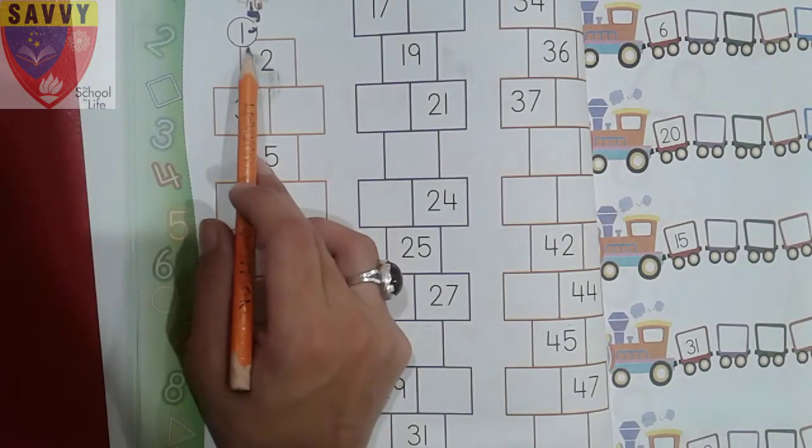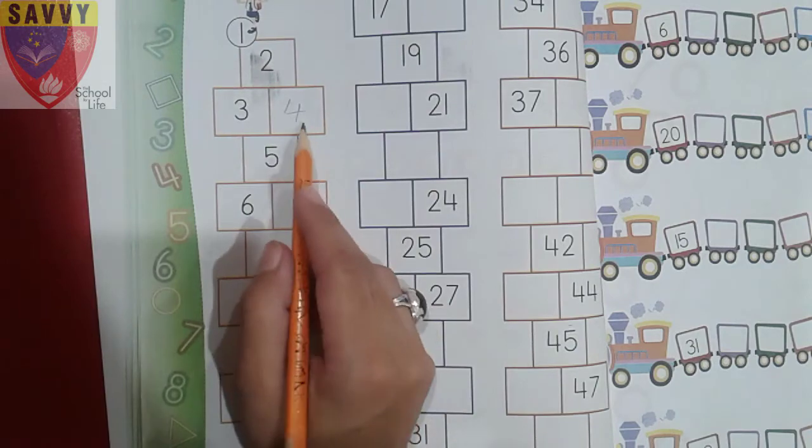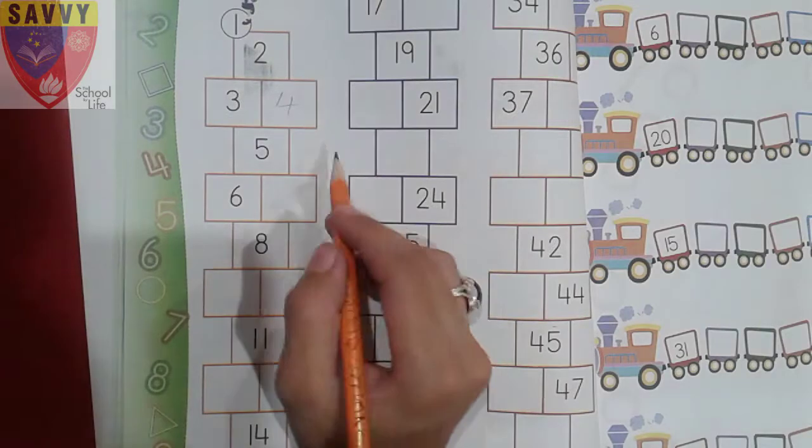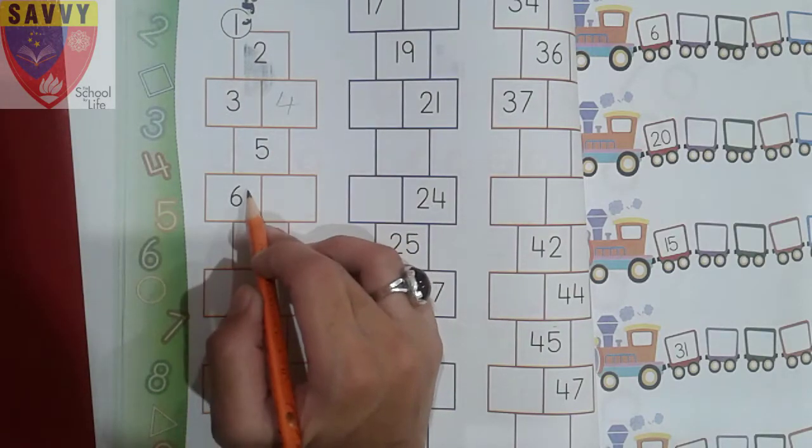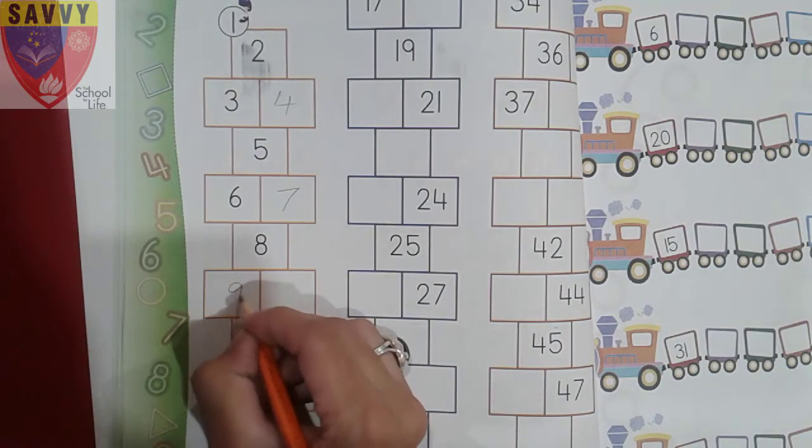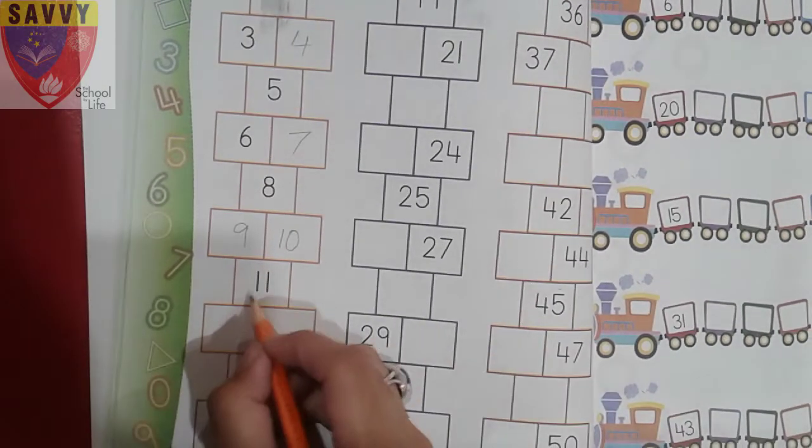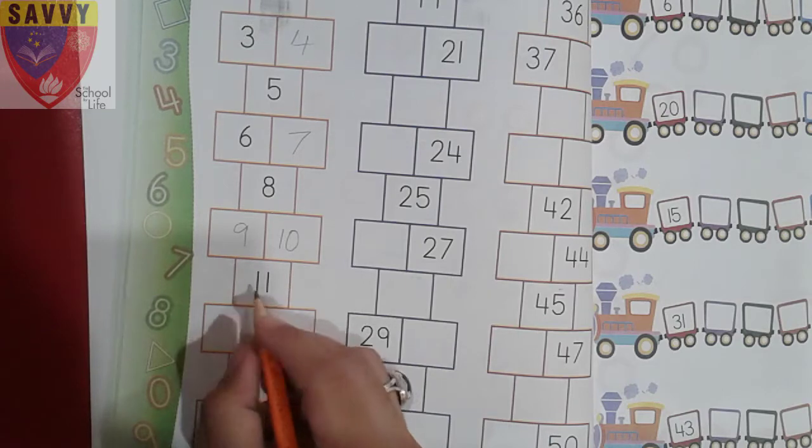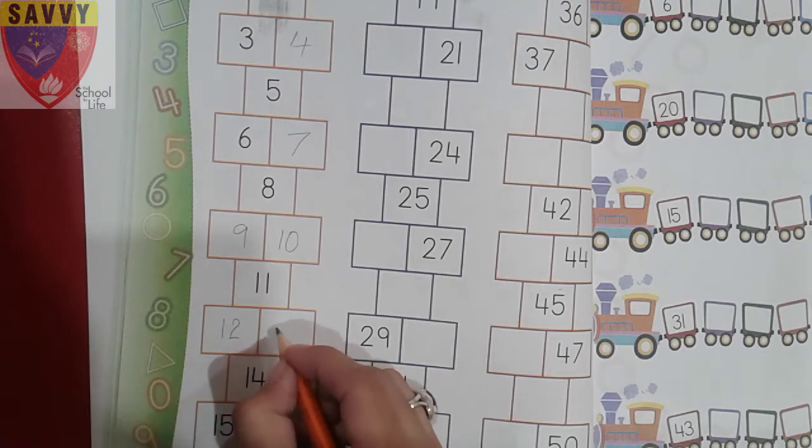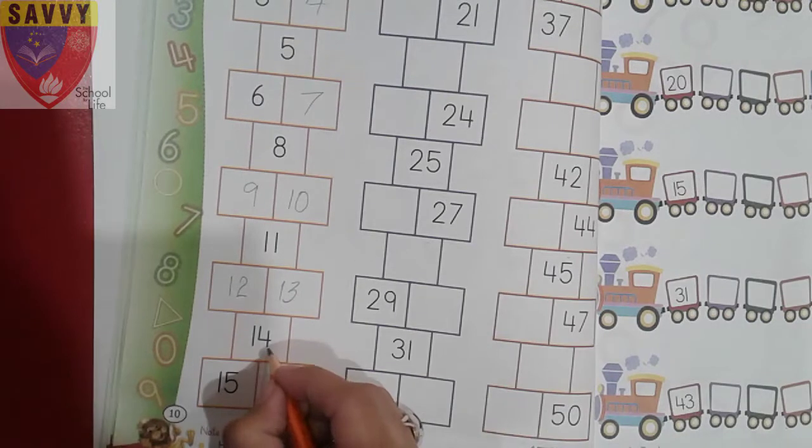Let's start. Are you ready? Okay, take your pencils and write with me. One, two, three, four - four is missing, we write number four. Five, six, seven, eight, nine, ten, eleven. Very good, ten and one is eleven.